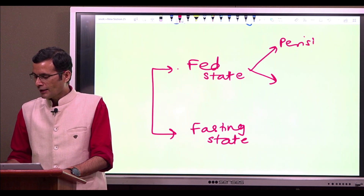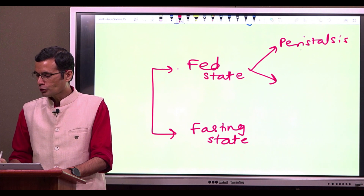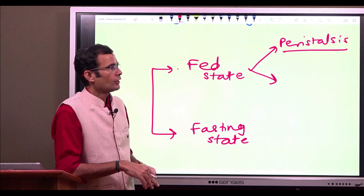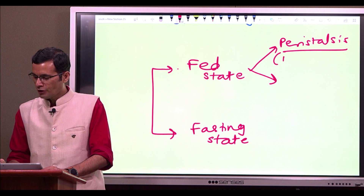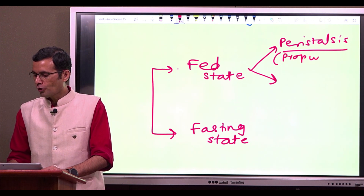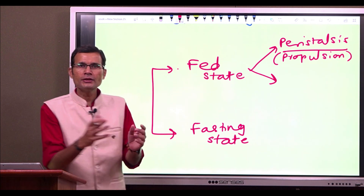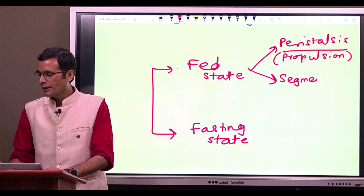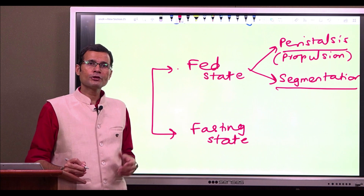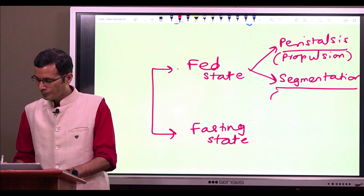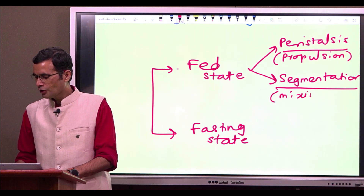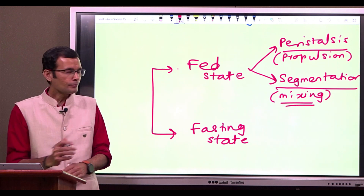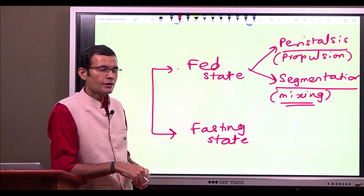There will be peristalsis, which are the propulsive movements for the sake of propulsion of foodstuffs. The other type of contractions are called segmentation contractions, which are for the purpose of mixing the foodstuffs with the digestive juices in the small intestine.